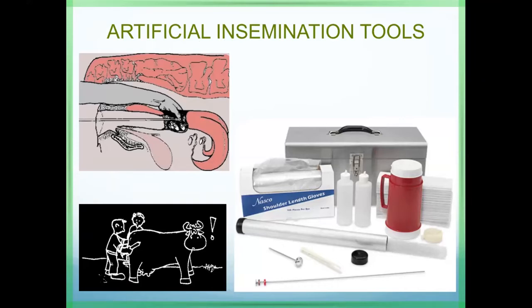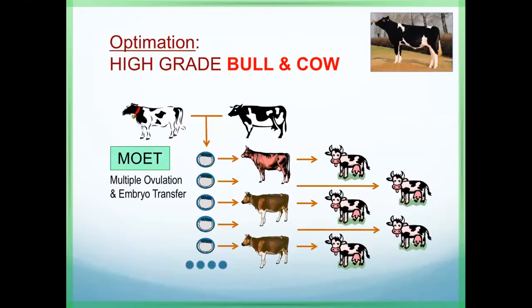If we have a high-grade bull and cows and do artificial insemination, the cows will become pregnant. Once a cow is pregnant, she will not ovulate and we have to wait nine months to get the baby. So by doing multiple ovulation and embryo transfer (MOET), we try to stimulate the donor cows to have more ovulations.